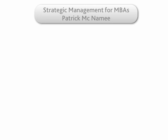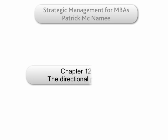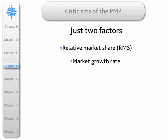Hi, how are you today? We now move on to Part 2 of Chapter 12, called the Directional Policy Matrix. When we looked at the product market portfolio, there were just two factors which determined strategic location: relative market share and market growth rate.